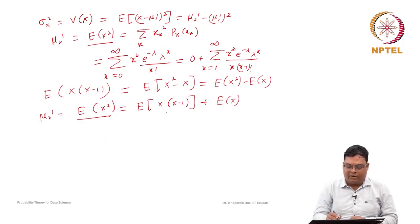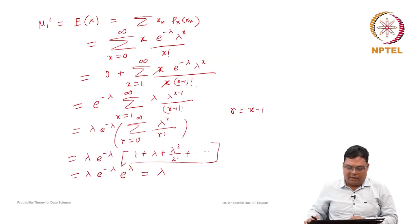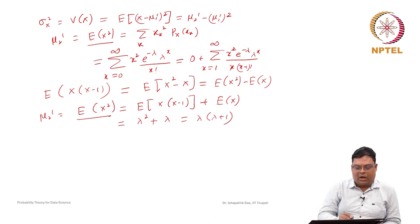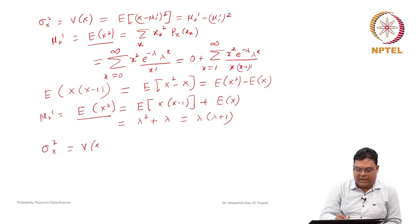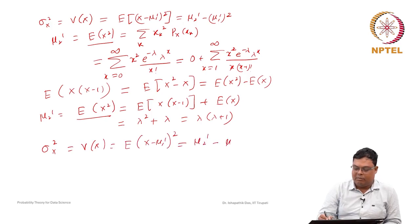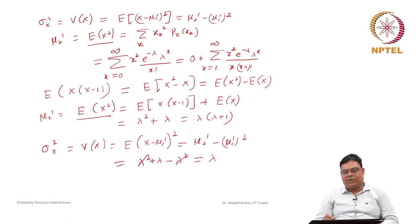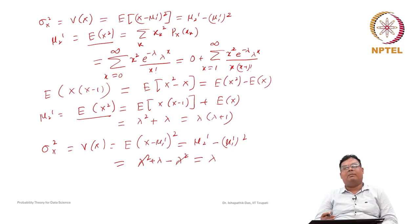So E[x(x-1)] = λ². Therefore E[x²] = μ₂' = λ² + E[x] = λ² + λ. The variance is Var(x) = μ₂' - (μ₁')² = (λ² + λ) - λ² = λ. So the variance of a Poisson distribution is λ, and the mean is also λ. Mean and variance of the Poisson distribution are equal — both equal to the parameter λ. This is an example of a random variable where mean equals variance.